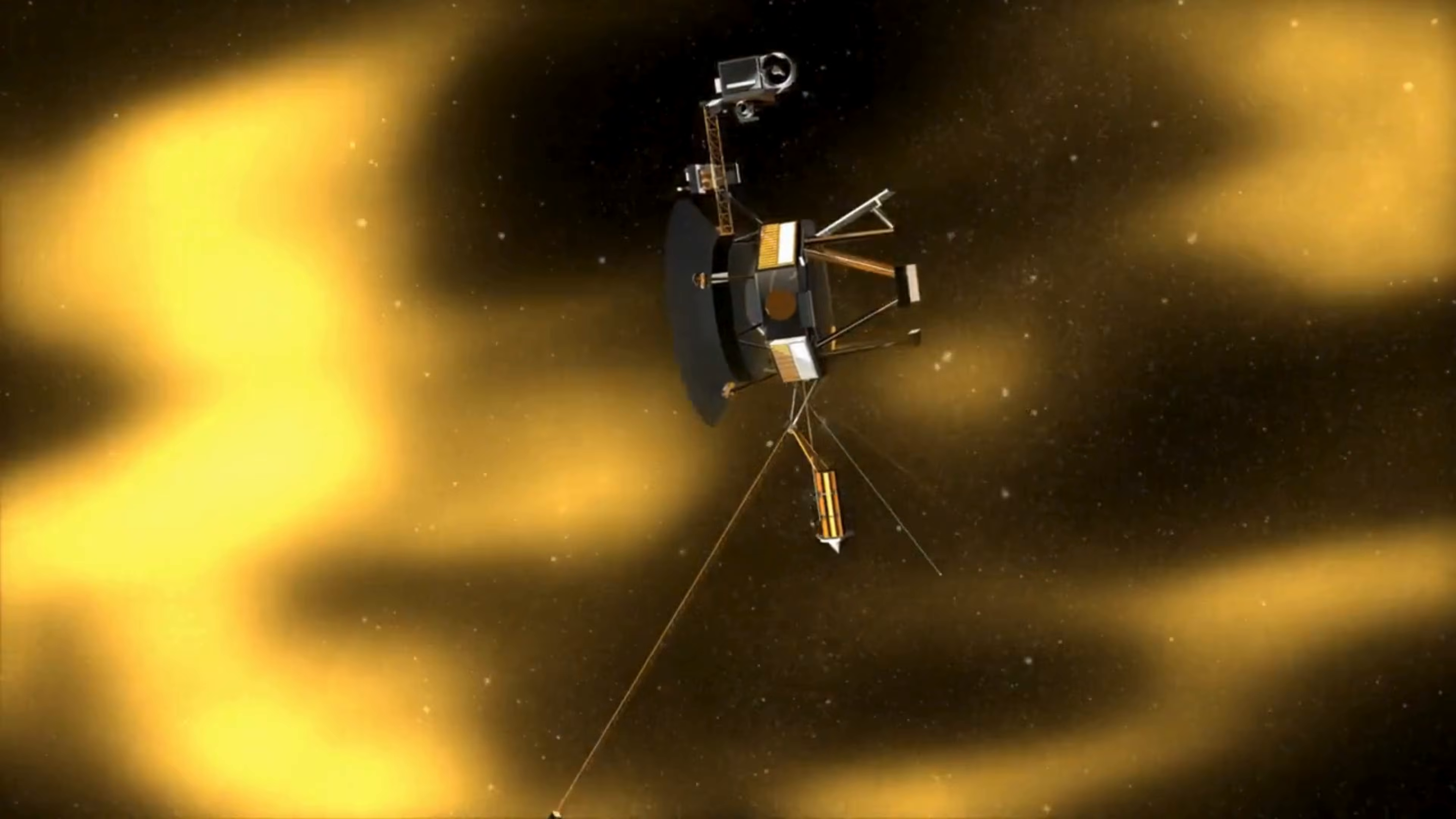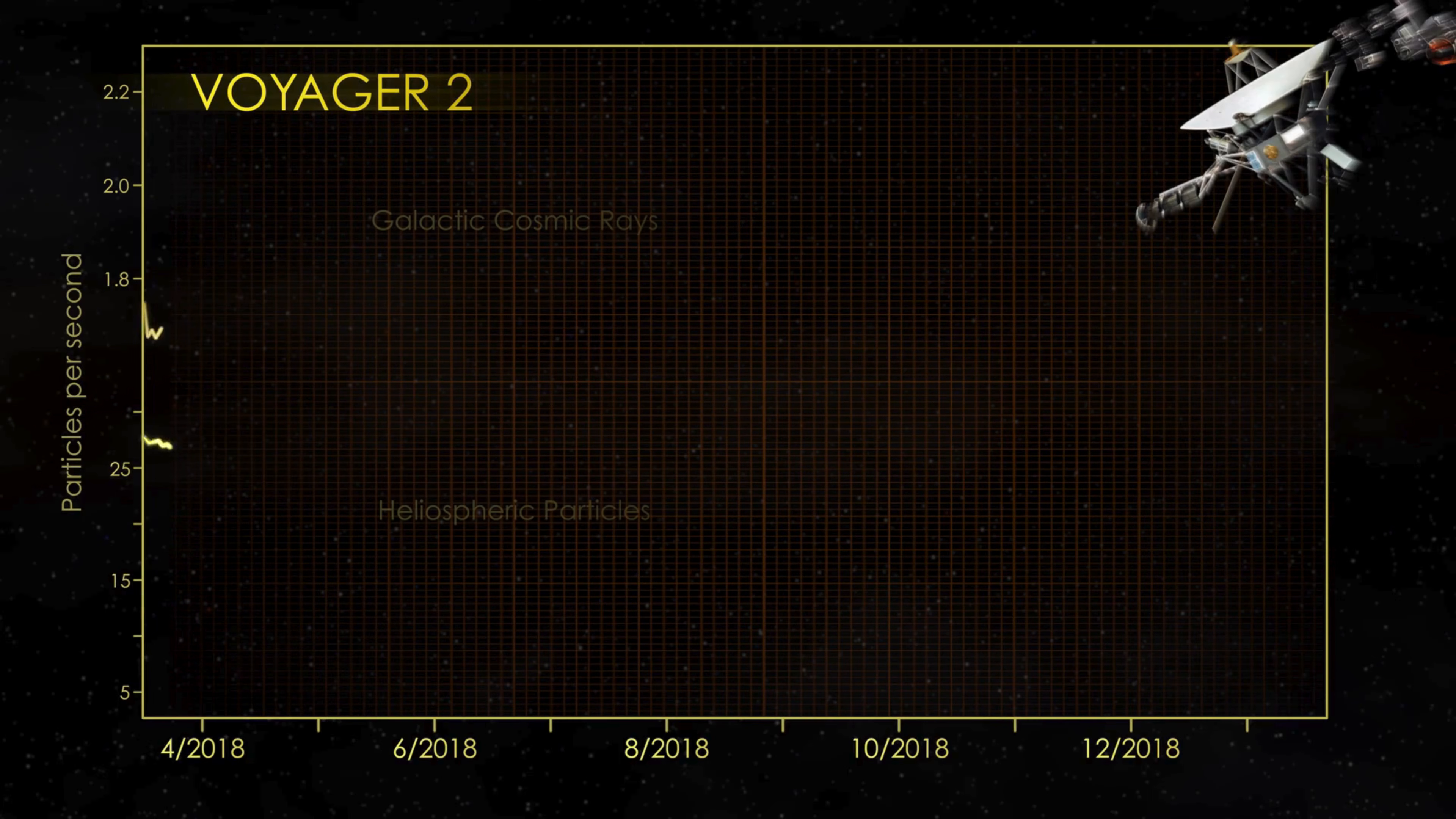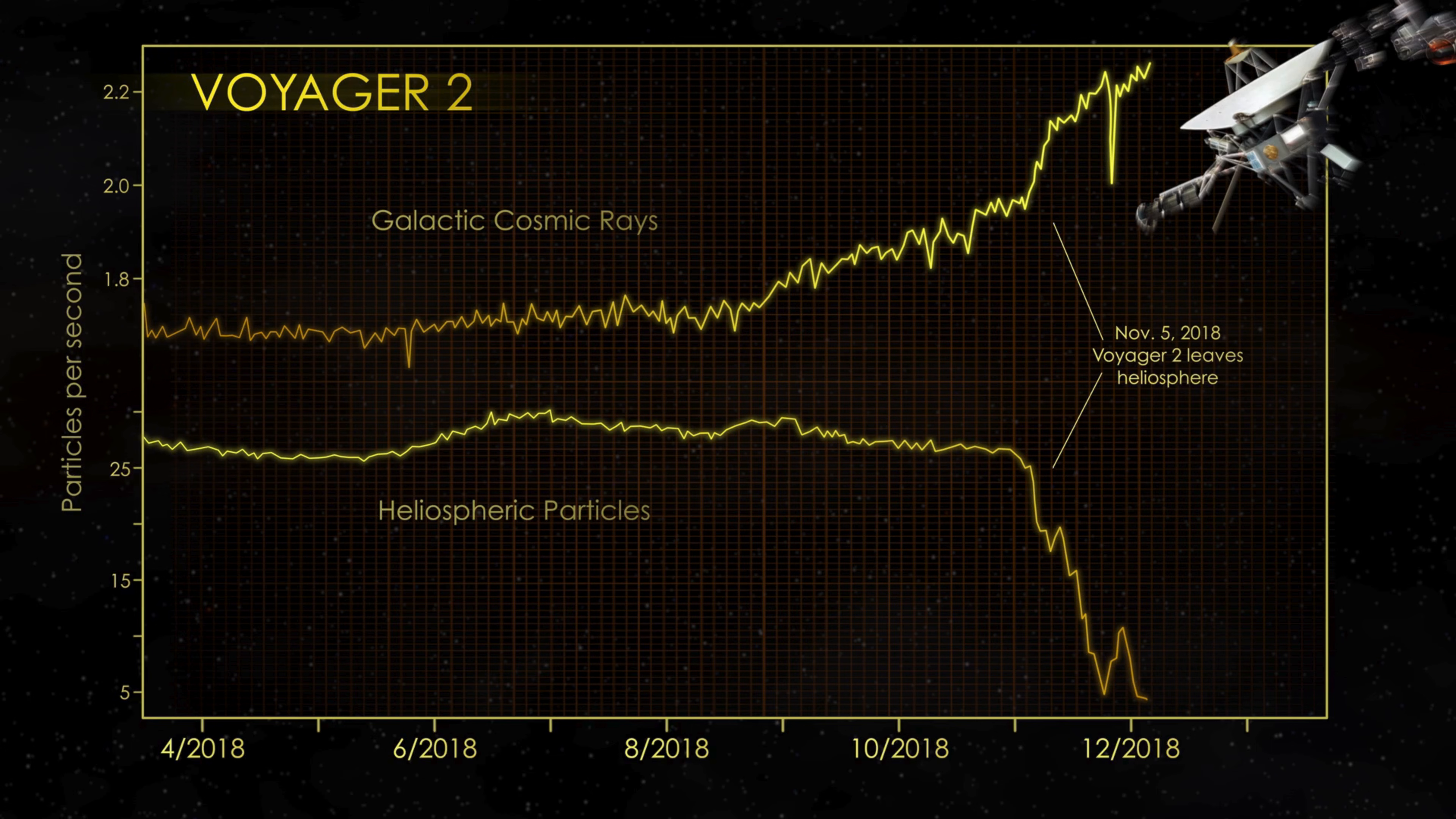As Voyager made its way across the heliopause into interstellar space, it detected significant changes in the plasma environment. The spacecraft observed a decrease in solar wind particles and an increase in the number of galactic cosmic rays originating outside the heliosphere.